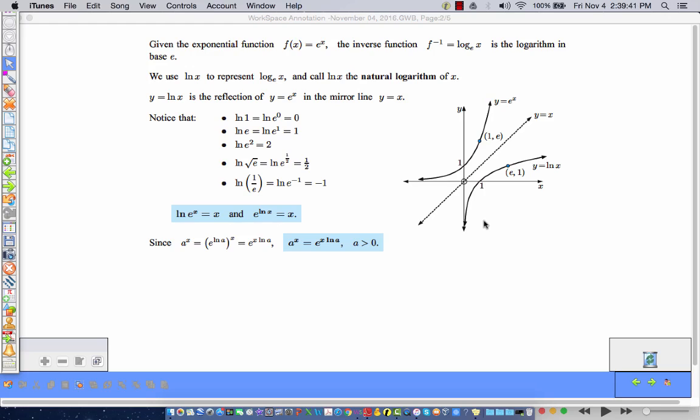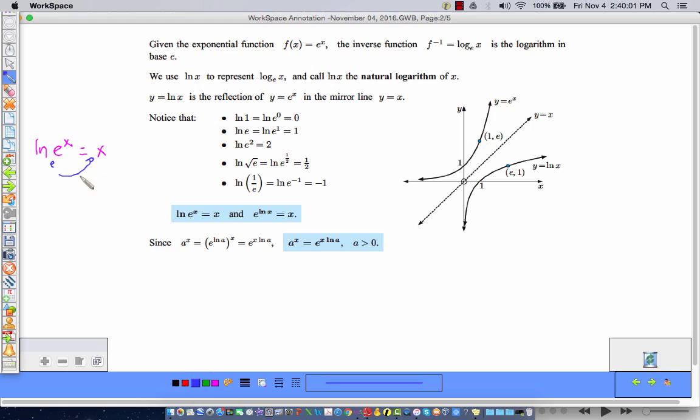Now, some special relationships we've got here. We have the natural log of E to the X is equal to X. Well, that makes sense. That's just the relationship between exponential notation and logarithmic notation because, remember, natural log has a base of E, so E to the X must be equal to E to the X. So that makes perfect sense. That's with all other logarithms.